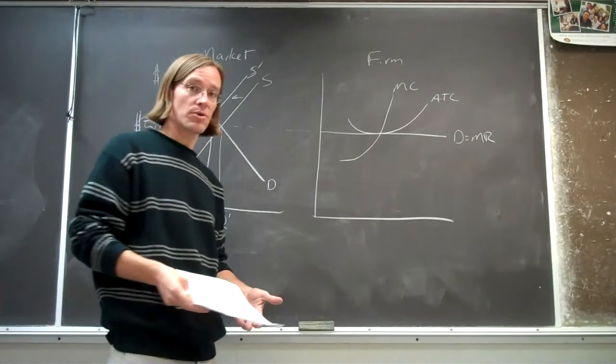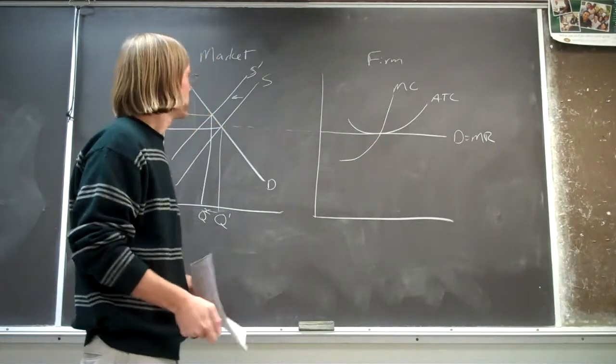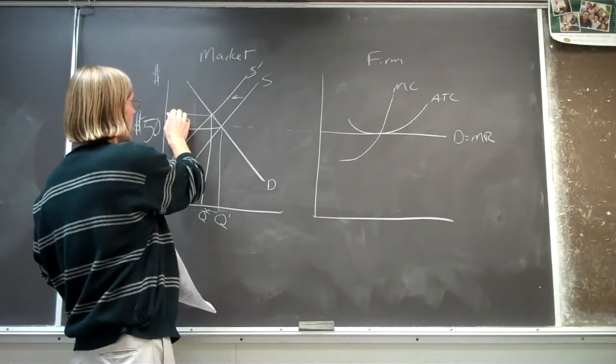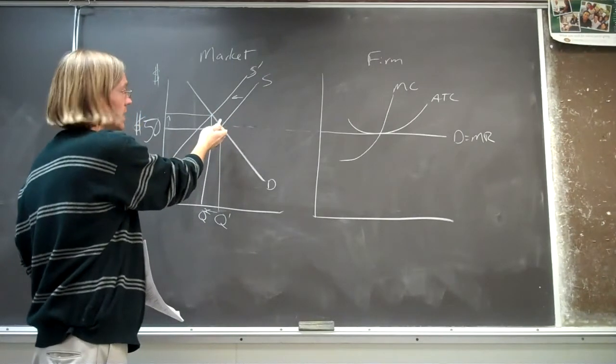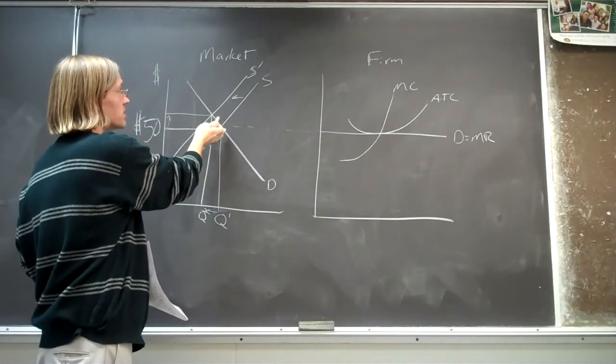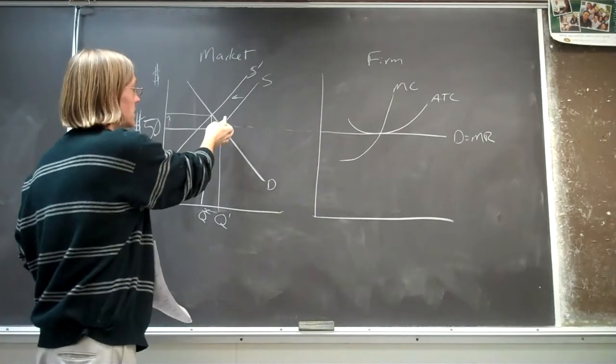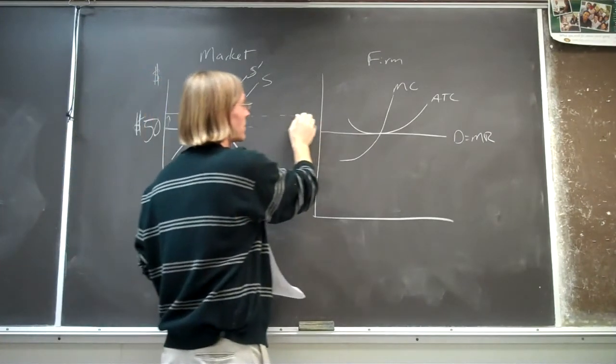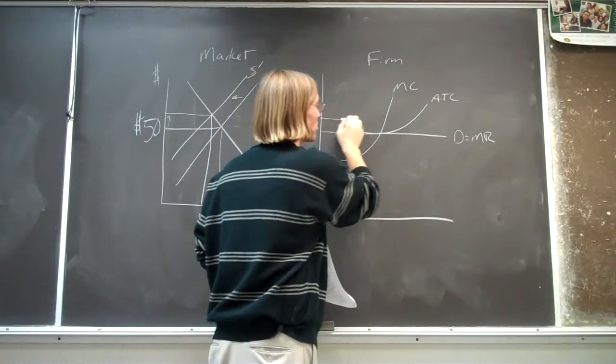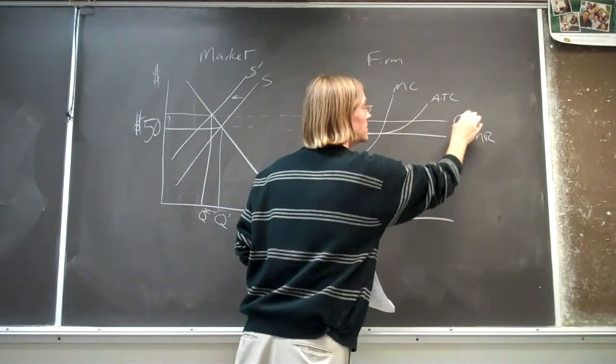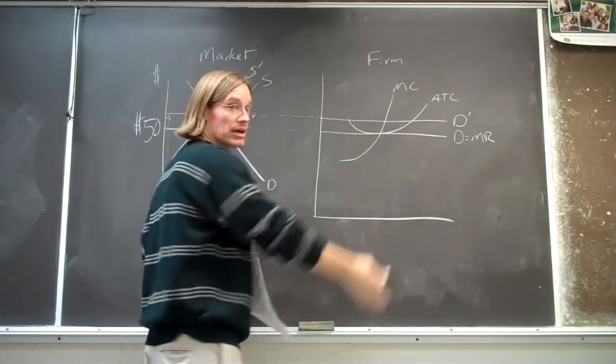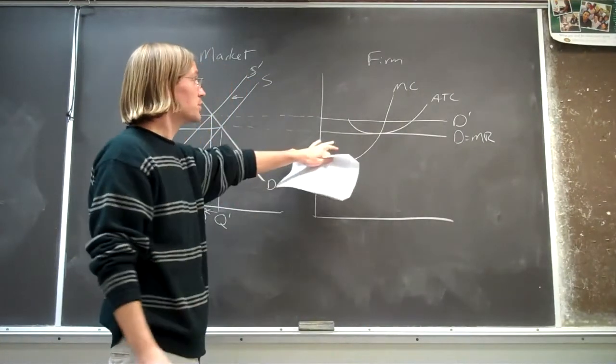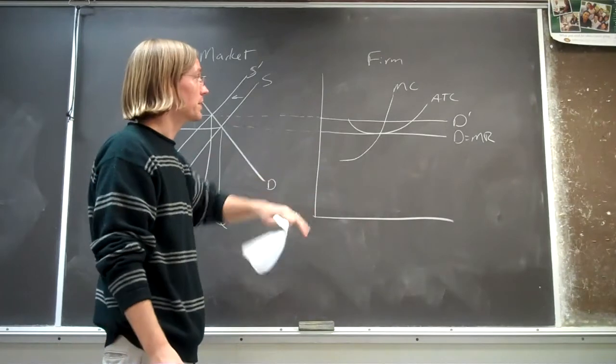So in the long run, what's going to happen? Well, again, this higher price that occurred because some of the firms exited the industry, that shifted that supply curve back. Now we're going to have this higher price feeding in to the market at firm level, right? And so firms are going to start making a profit at this point.